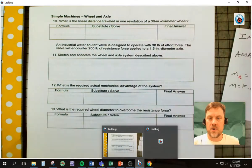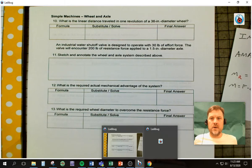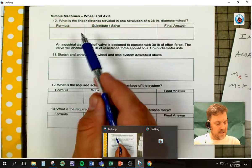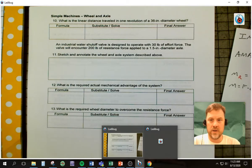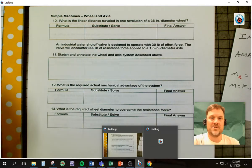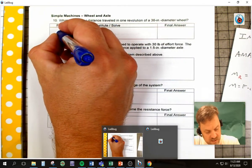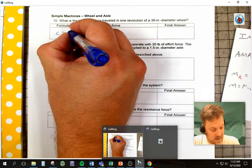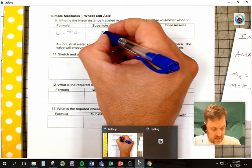All right, welcome back. We're going to work the next problems on activity 1.1.2 for POE, problems 10 through 13. So we're going to start out here. It says, what is the linear distance traveled in one rotation of a 36 inch diameter wheel? So what is it asking me to do? It's asking me to find the circumference. That's the distance that it's going to travel in one rotation. So circumference is pi times diameter.